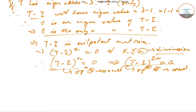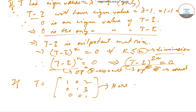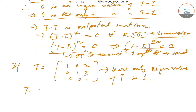Let us take an example to verify the other options. Consider the matrix T with entries [1, 0, 2; 0, 1, 3; 0, 0, 1], where the only eigenvalue of T is 1. Then T minus I gives the matrix [0, 0, 2; 0, 0, 3; 0, 0, 0], which is not the null matrix, so T minus I is not equal to 0.